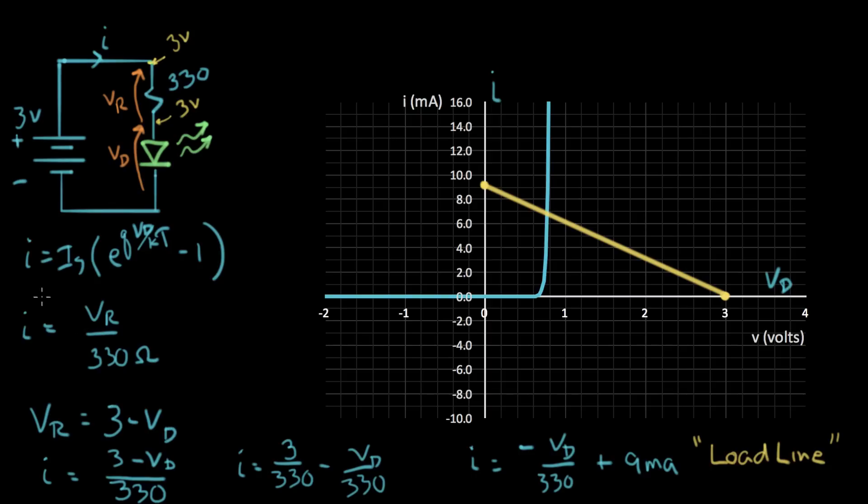You remember back over here we said we could solve these two equations by setting the two I's equal to each other. And that's basically where do these two lines intersect. And they intersect right here. That's the solution to our problem. So this intersection point is the solution. It's where the resistor current and the diode current are the same. And that's that point there. And now I can just read off my answer.